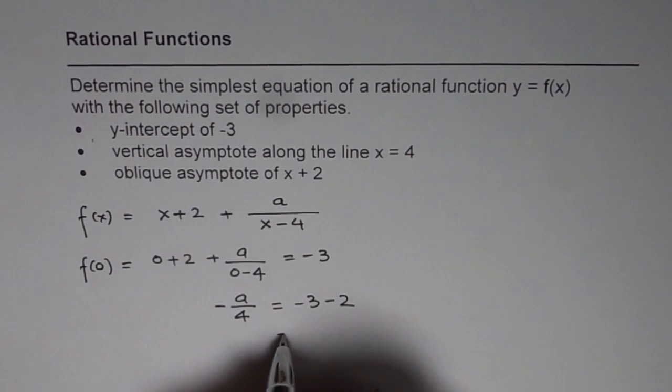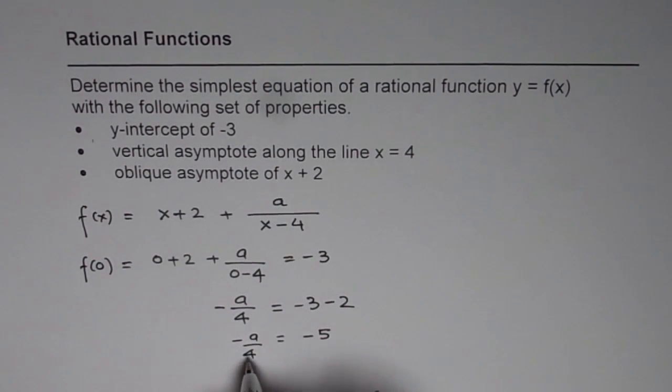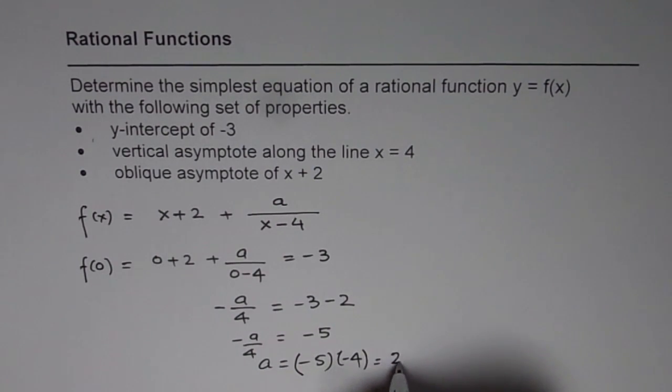Which is -5. So -a over 4 is -5. We can cross multiply, then a equals to -5 times -4, and we get a equals to 20.